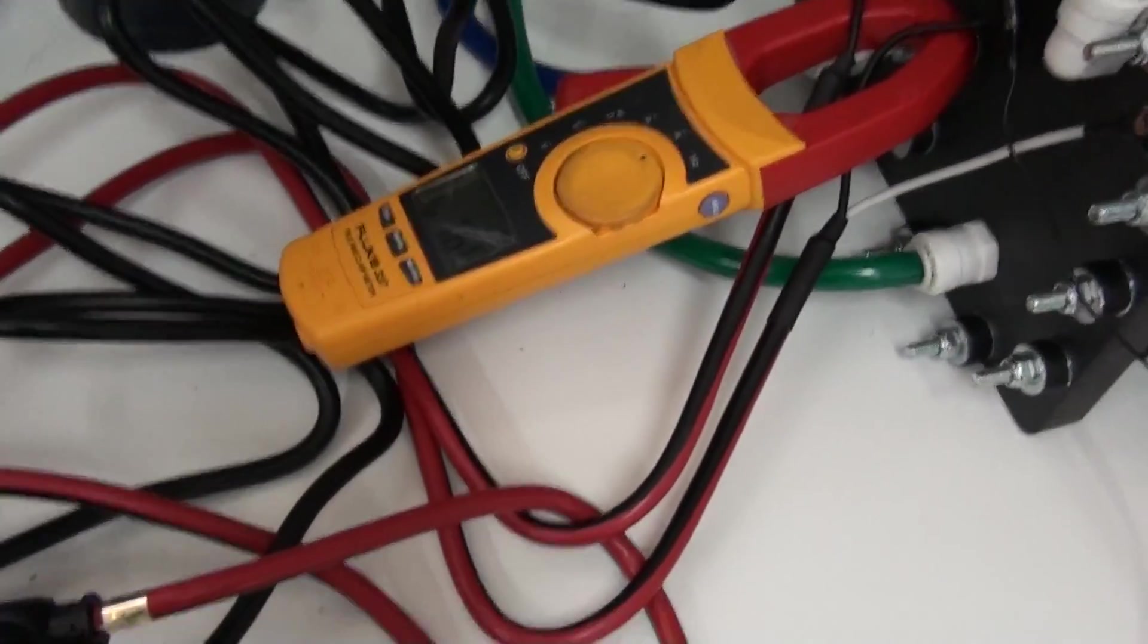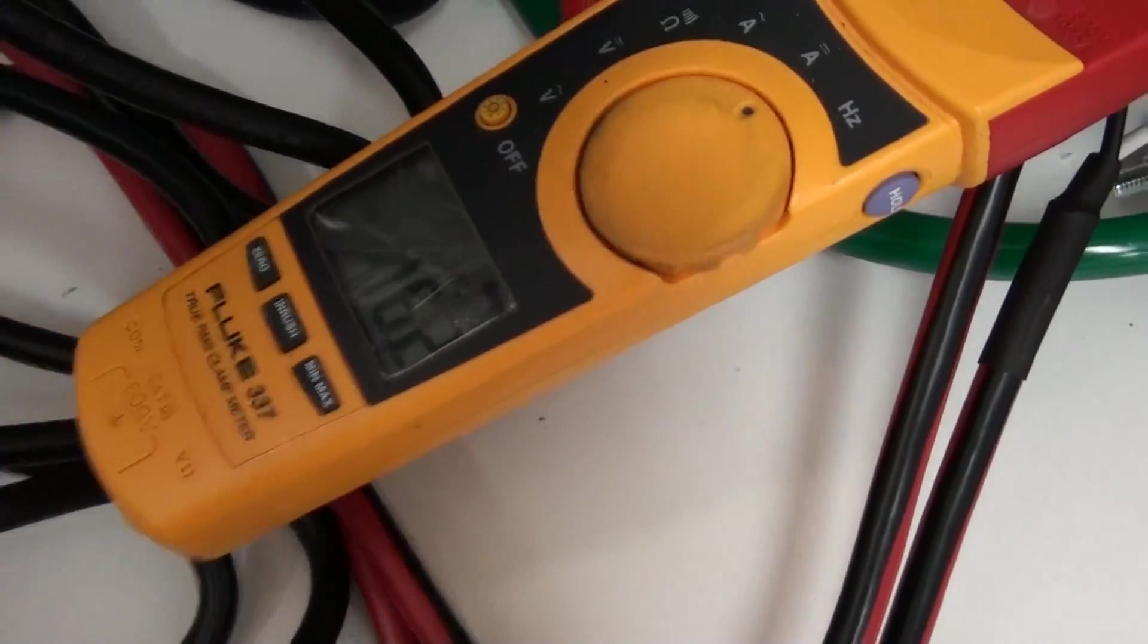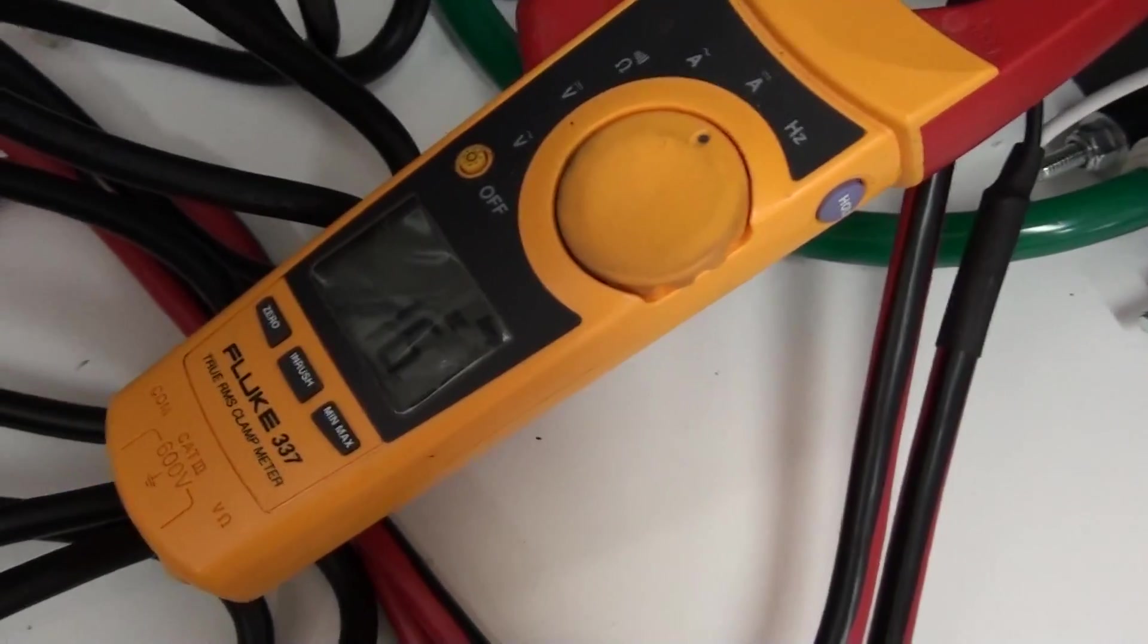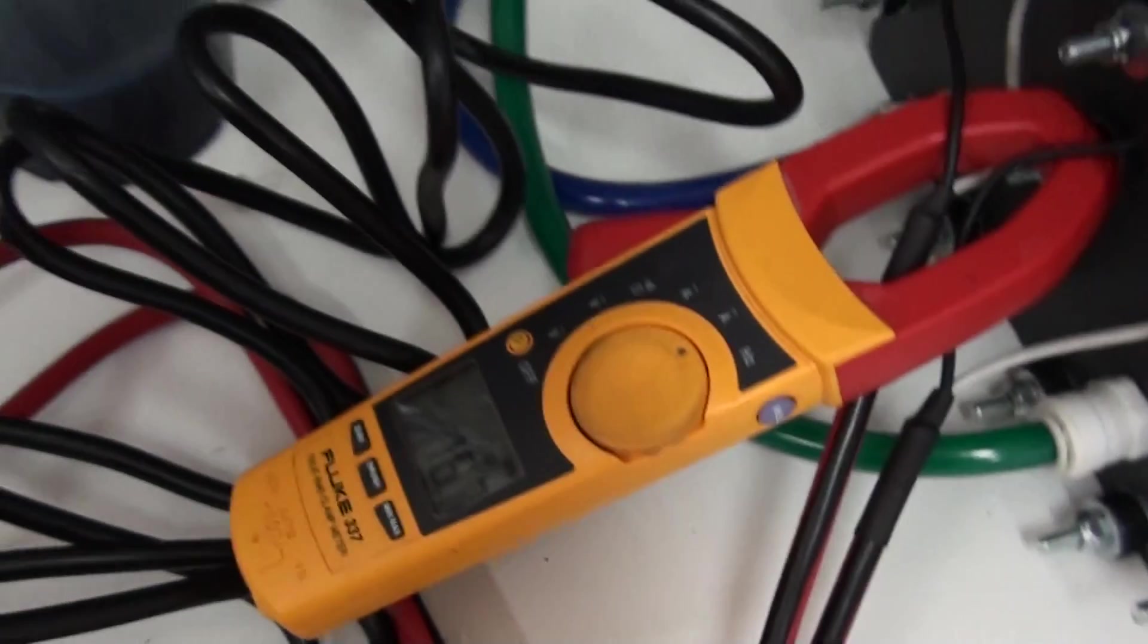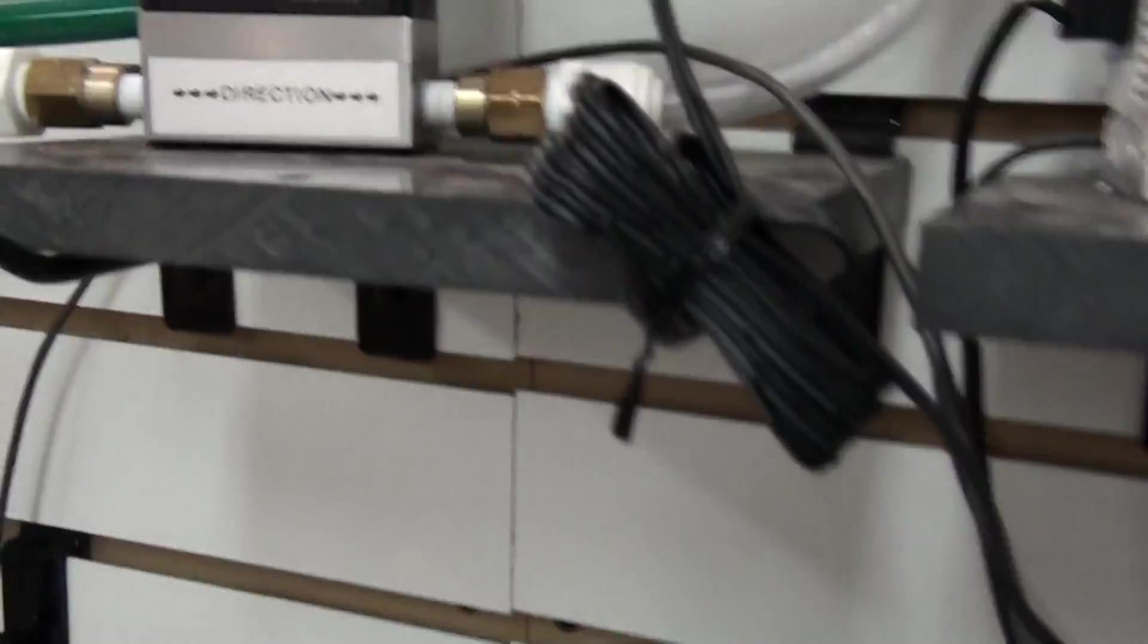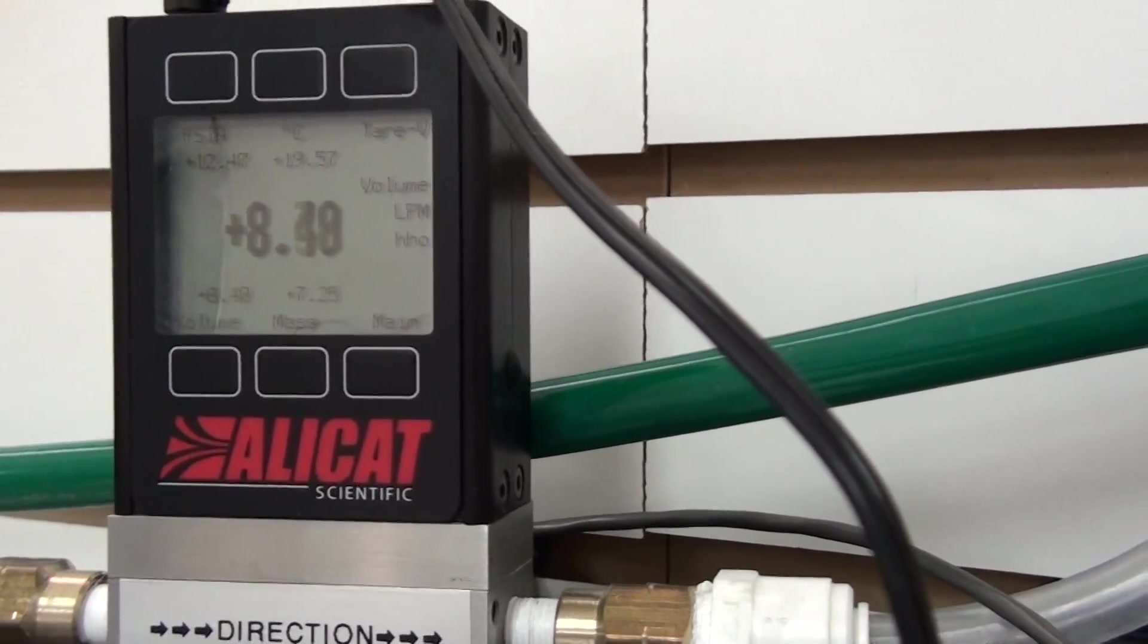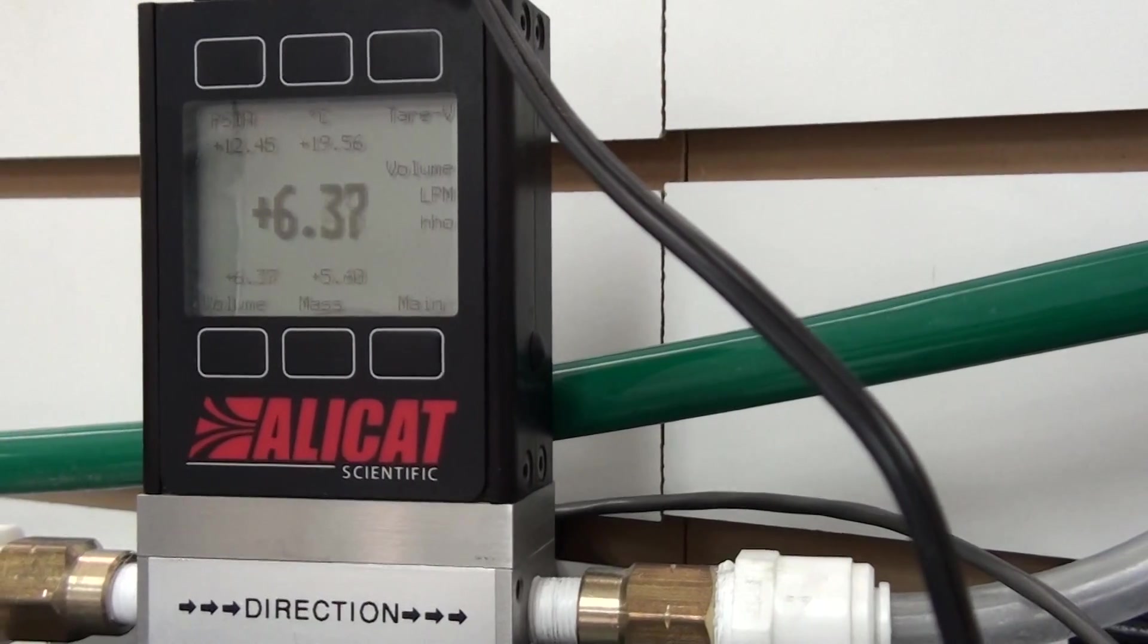I'll show you the variable. See as I turn the dial down, the amps will go down. You can also see as I turn the amps down, liters per minute will fall.